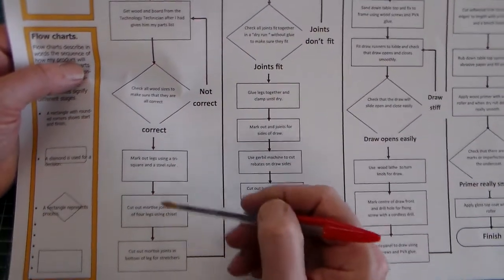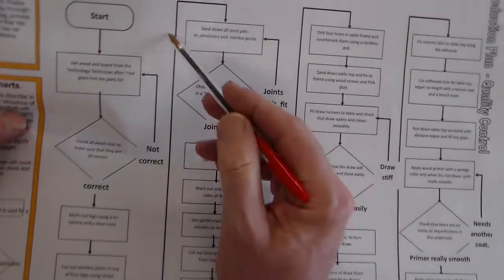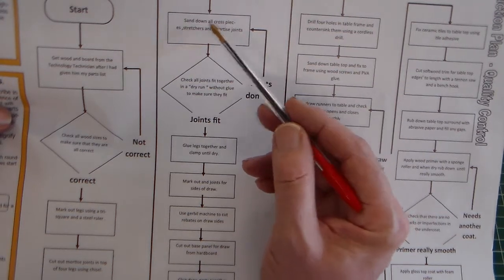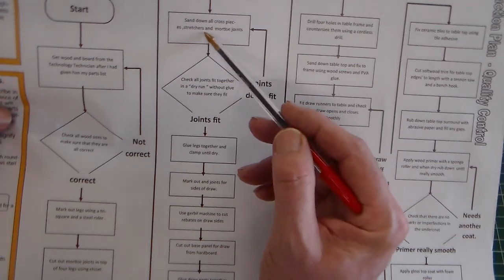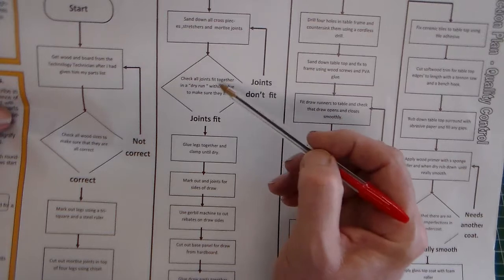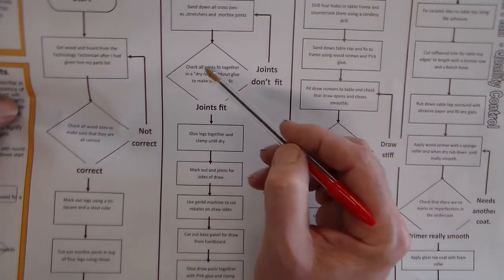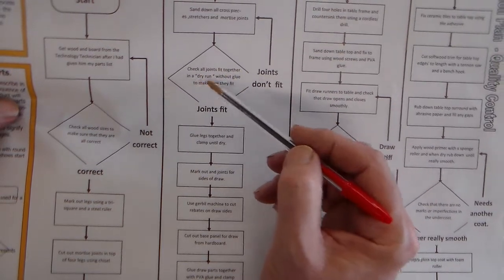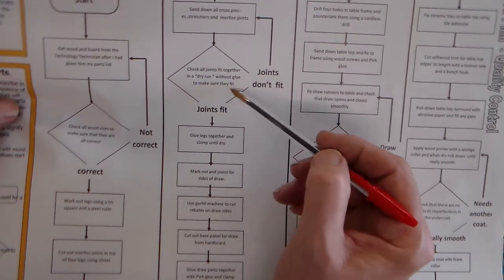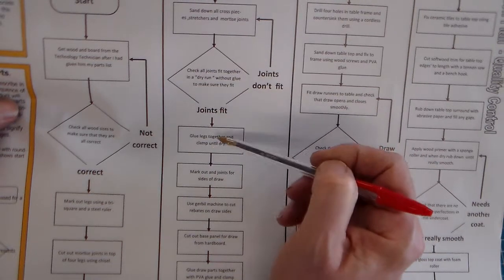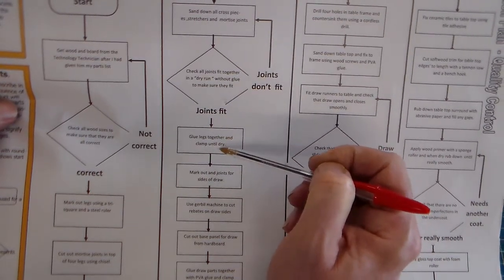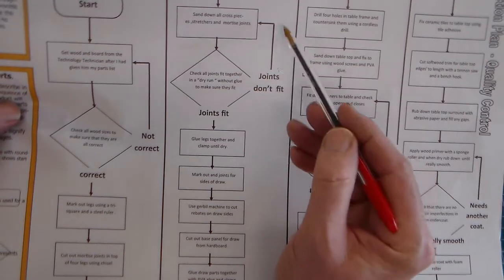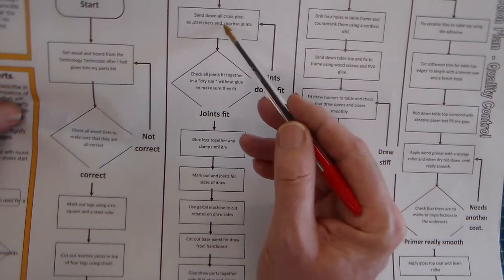We go down to marking out the joints, then sand down all cross pieces, stretches, and mortise joints. The next quality control check is: check all joints fit together in a dry run without glue to make sure they fit. If the joints fit, glue them together and clamp until dry. If they don't fit, sand down and check the legs again.